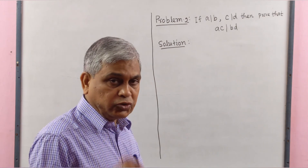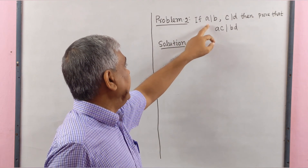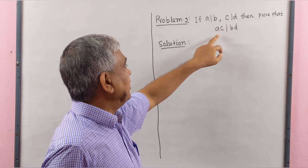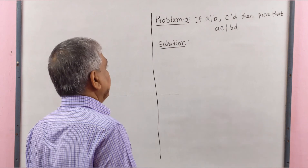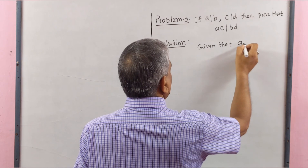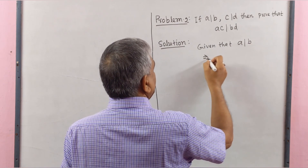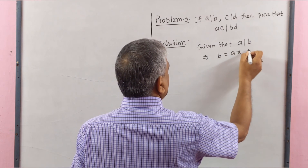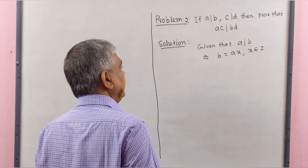Now we solve problem number 2. If A divides B and C divides D, then prove that AC divides BD. Given that A divides B, this implies B equals AX, where X belongs to Z, meaning X is an integer. This is equation number 1.